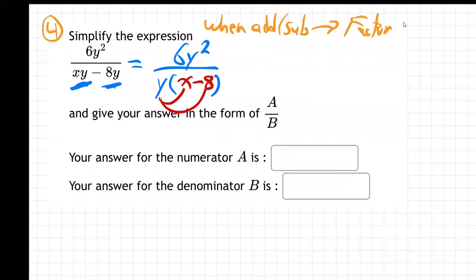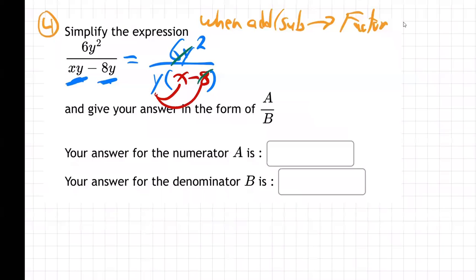So we factor the bottom, which means we change it to multiply. That's what factoring means - change to multiply. Now we can cancel some stuff. Because again, you cannot cancel added or subtracted items. You can't cancel added or subtracted items, but you can cancel multiplied items.